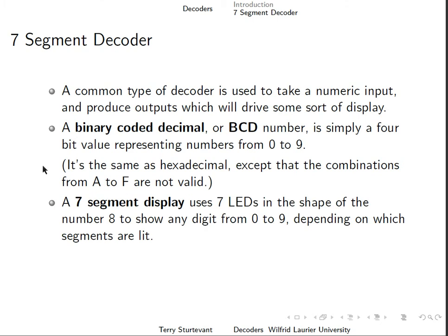A 7-segment display uses 7 LEDs in the shape of the number 8 to show any digit from 0 to 9 depending on which segments are lit. It's what you usually see on calculators and things like that. So BCD to 7-segment conversion is a good example of the use of a decoder.